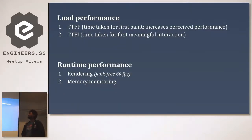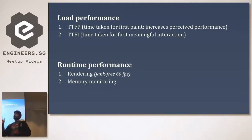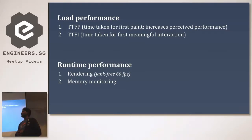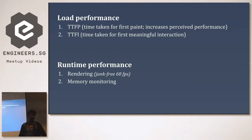In the JS world, performance is a huge topic. I categorize it into two major categories: load performance and runtime performance. For load performance, the two important metrics are time to first meaningful paint — showing users some meaningful content to increase perceived performance, since they don't want to see a huge loading spinner — and time to first meaningful interaction. We can employ fastboot to achieve the first meaningful paint, rendering HTML on the server and sending it to the browser.